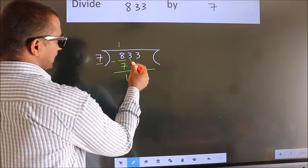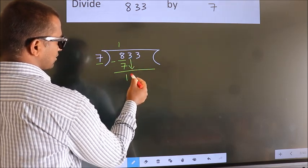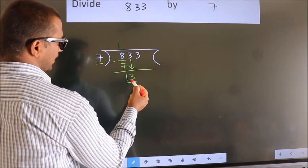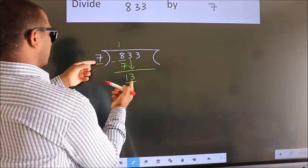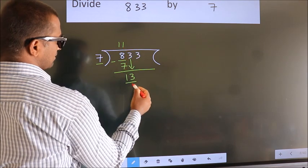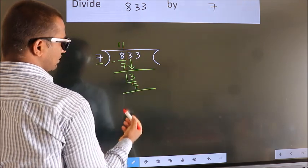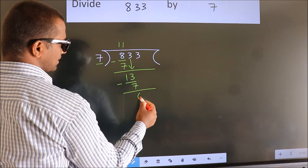After this, bring down the beside number. So, 3 down, making 13. A number close to 13 in the 7 table is 7 once 7. Now we subtract. We get 6.